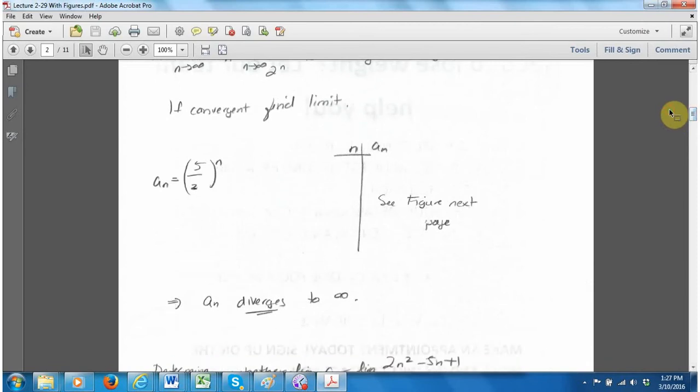We would say a_n diverges to infinity. That's important to know - not just that it's divergent, but also where it's headed to.